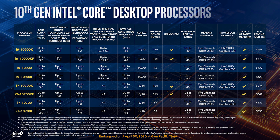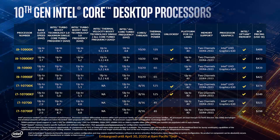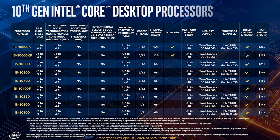First, looking at the list, we notice core count and thread count. The i9 has 10 cores and 20 threads, the i7 has 8 cores and 16 threads, the i5 models have 6 cores and 12 threads, and the i3 has 4 cores and 8 threads. The clock speed will increase - boost clock and turbo clock will go higher.